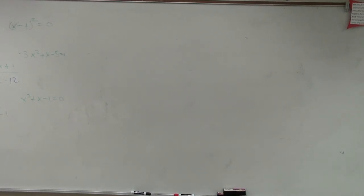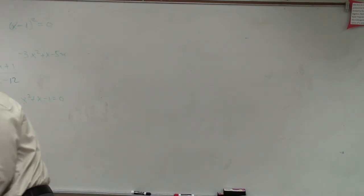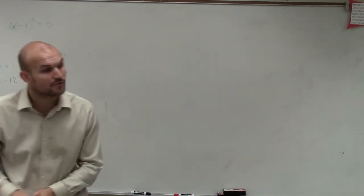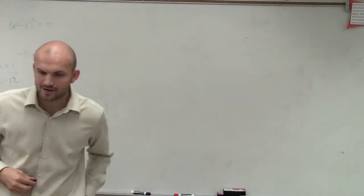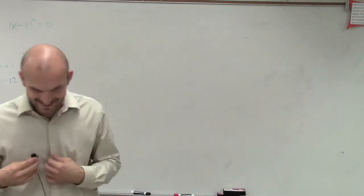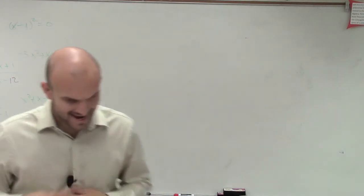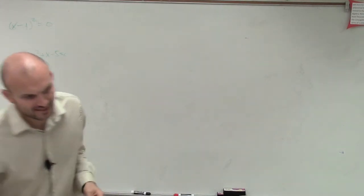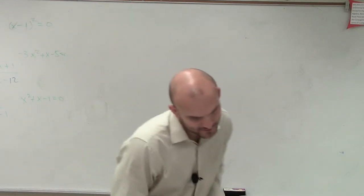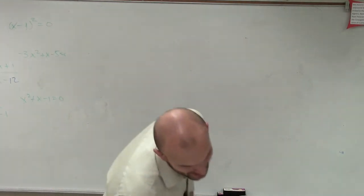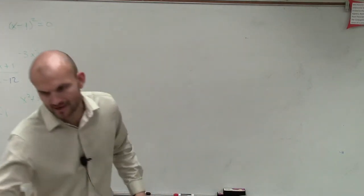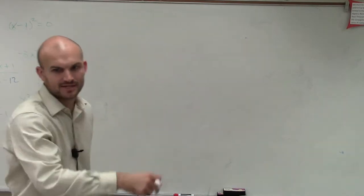Let's get to this one. I'm going to do number 55 for you guys. The problem — what we're going to do is we're going to learn about slant asymptotes. Number 55 tells us f of x equals x cubed divided by x squared minus 1.